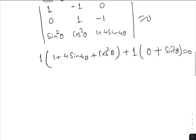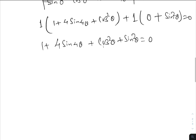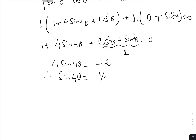Now we can evaluate the determinant. That gives 1 into (1 plus 4 sin 4θ) plus cos²θ plus 1 into sin²θ equal to 0. We can see that 1 plus 4 sin 4θ plus cos²θ plus sin²θ equals 0. Since cos²θ plus sin²θ equals 1, we get 4 sin 4θ equals minus 1 by 2.